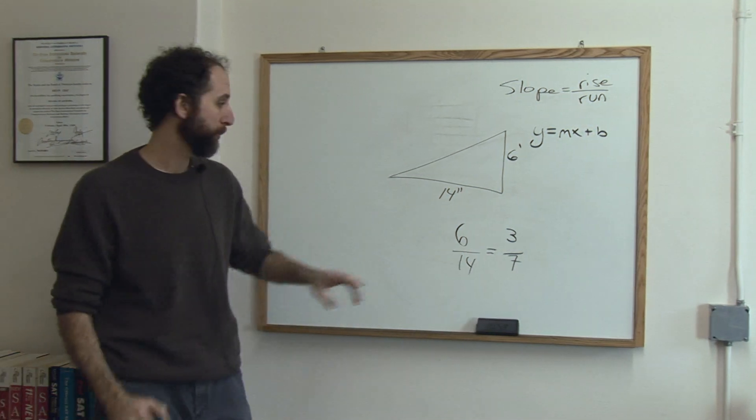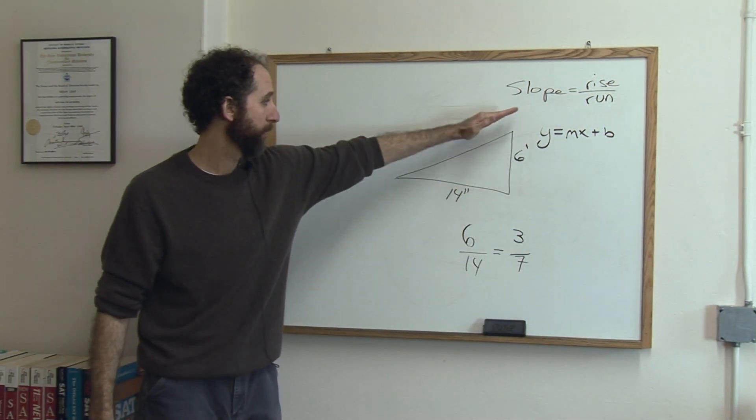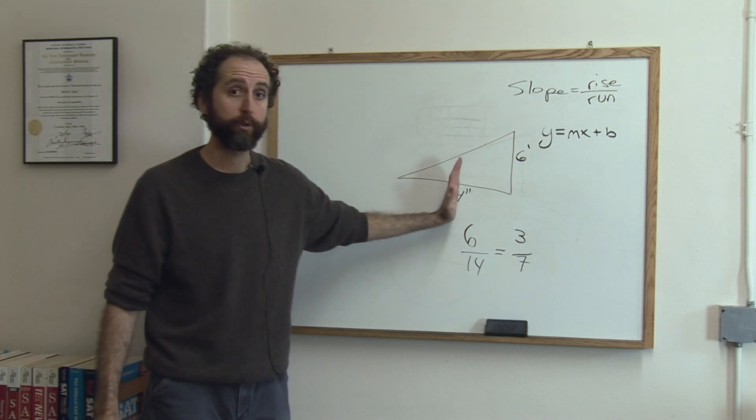So we'd say the slope of this ramp is 3 sevenths. So for every 3 feet it goes up, it goes over 7 feet.